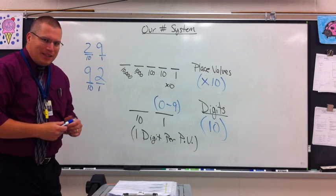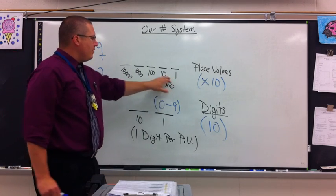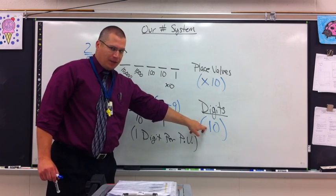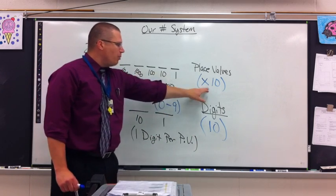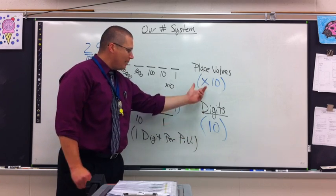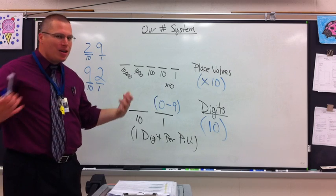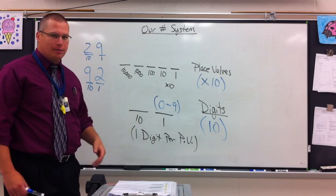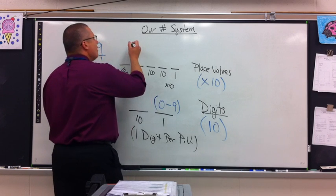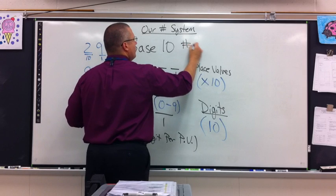So now look at what we've been dealing with your entire life. In order to find place values, I multiply by 10. Think about the digits you're allowed to choose. You're allowed to choose 10 different digits. Find place values, multiply by 10. Choose digits you have 10 to choose from. Times 10, you have 10. Times 10, you have 10. Times 10, you have 10. Times 10, you have 10. What number is our entire number system based upon? It's 10. Our number system is a base 10 number system.